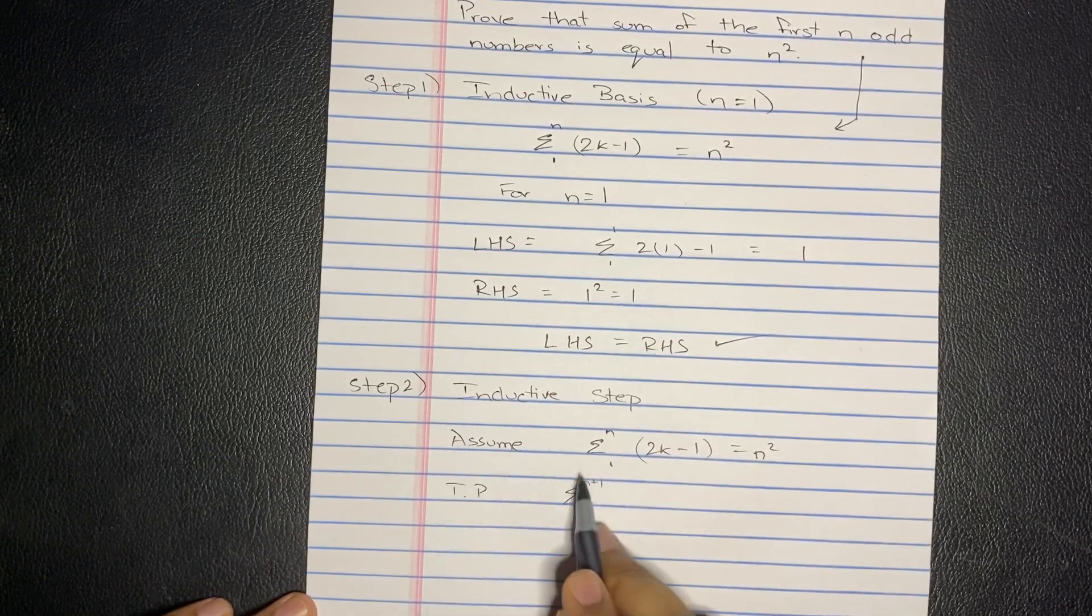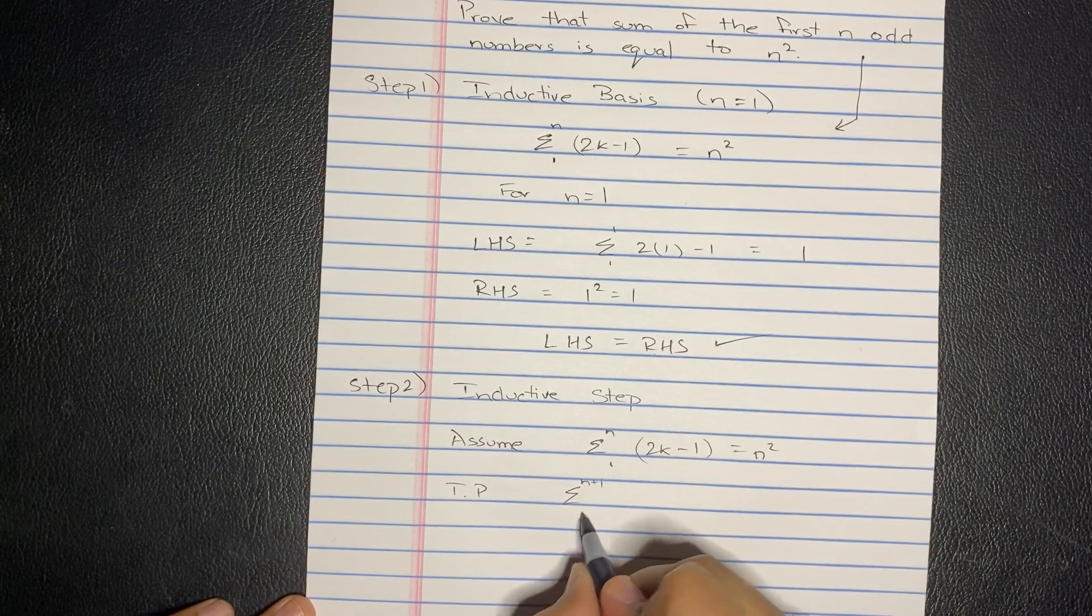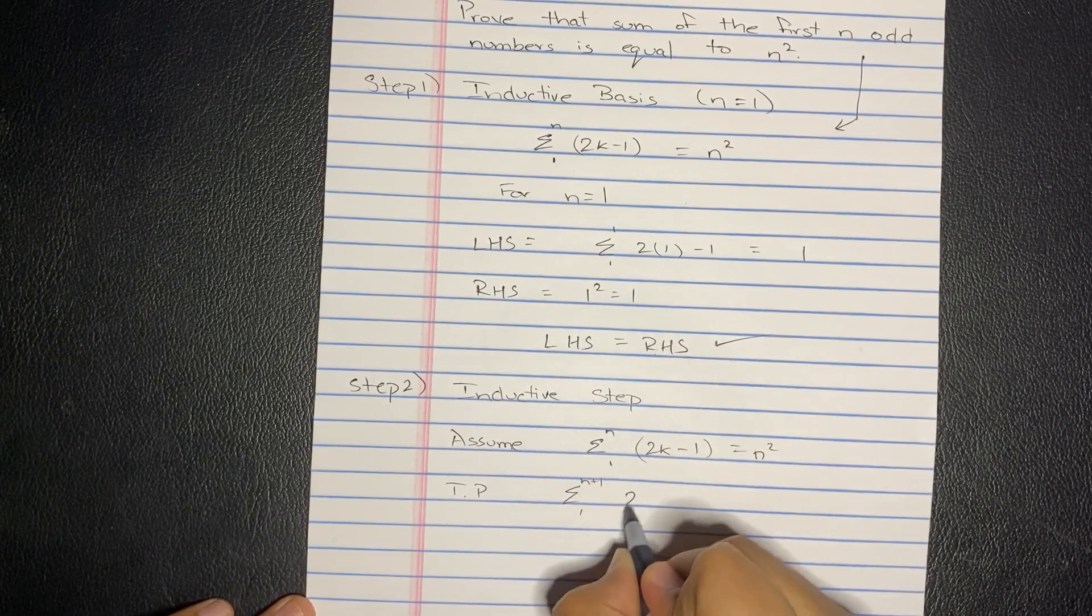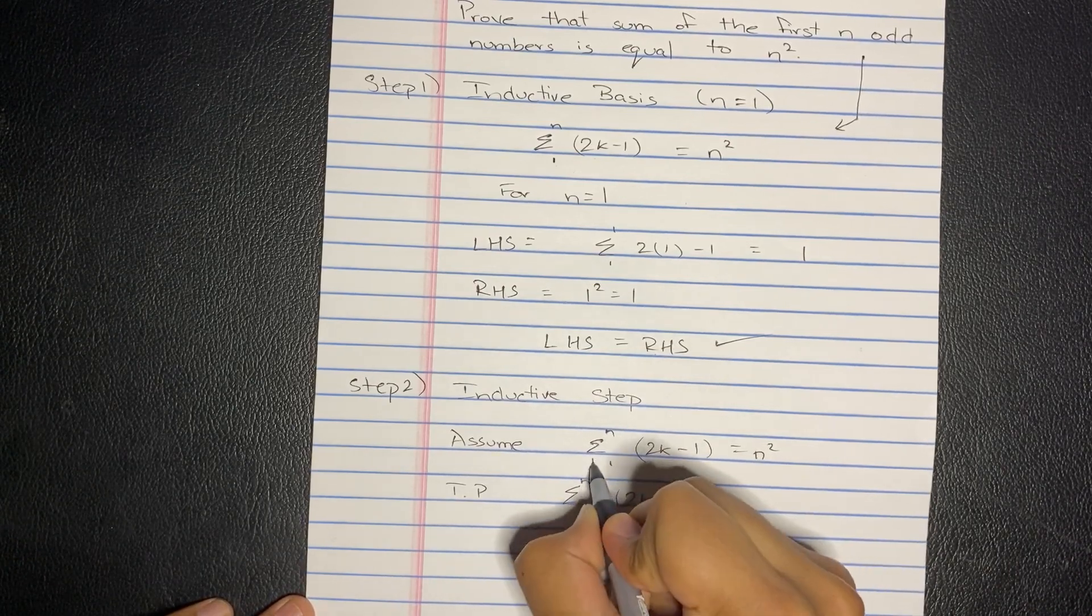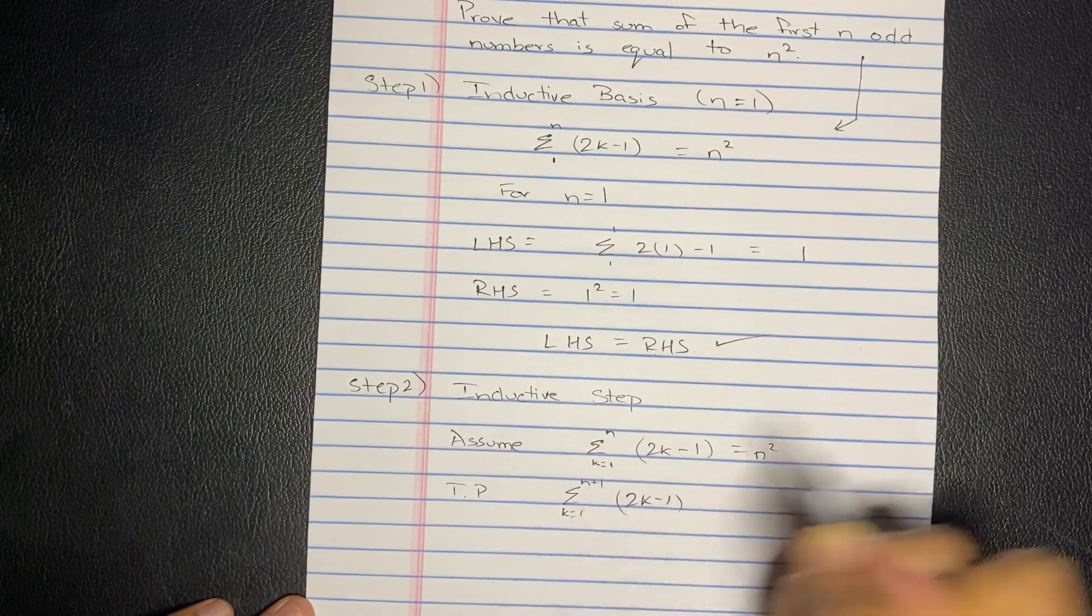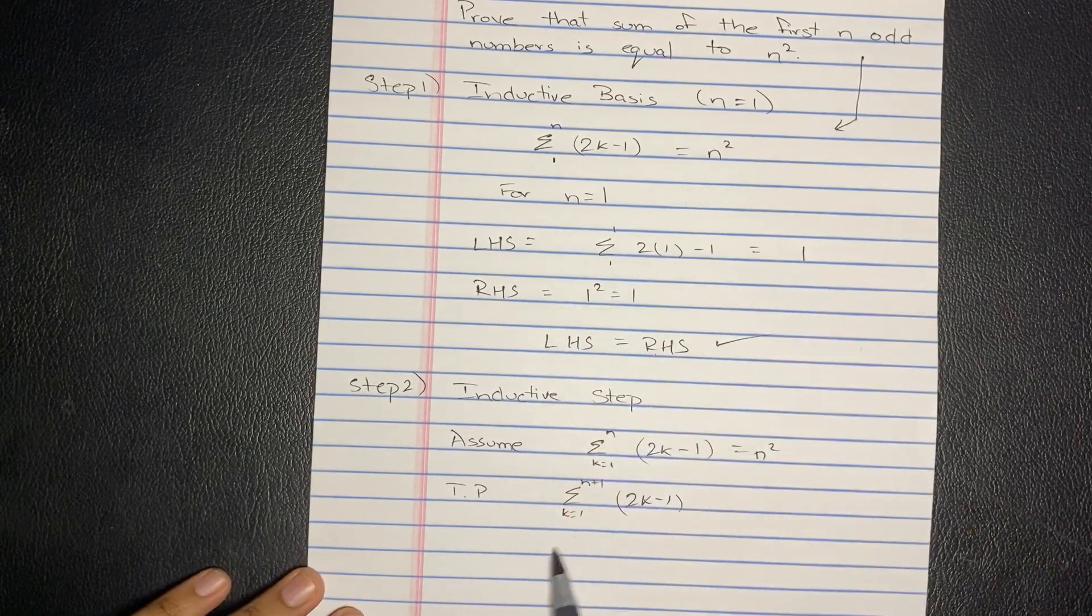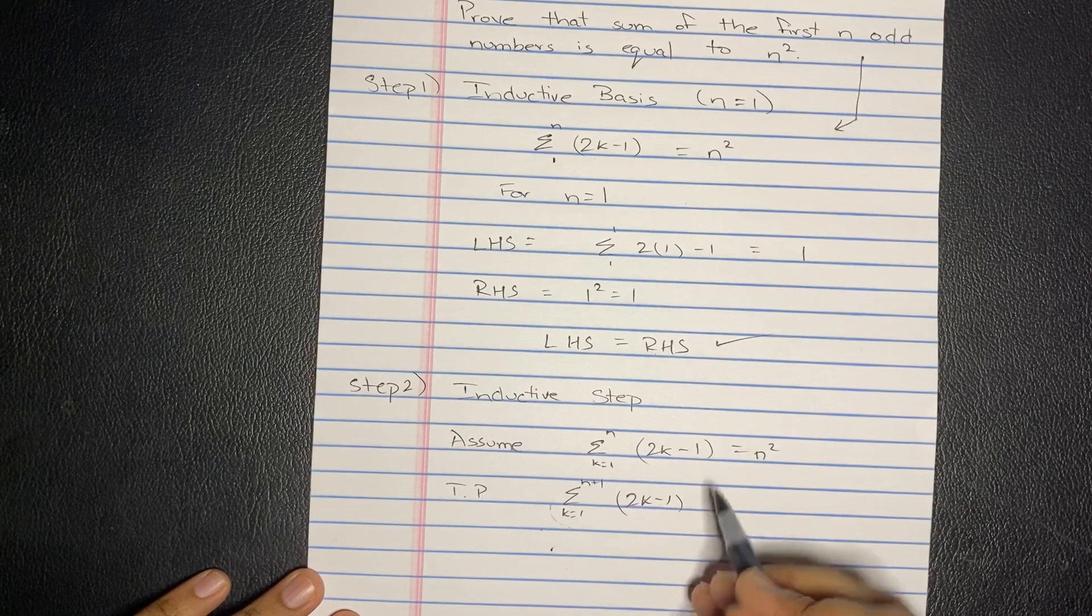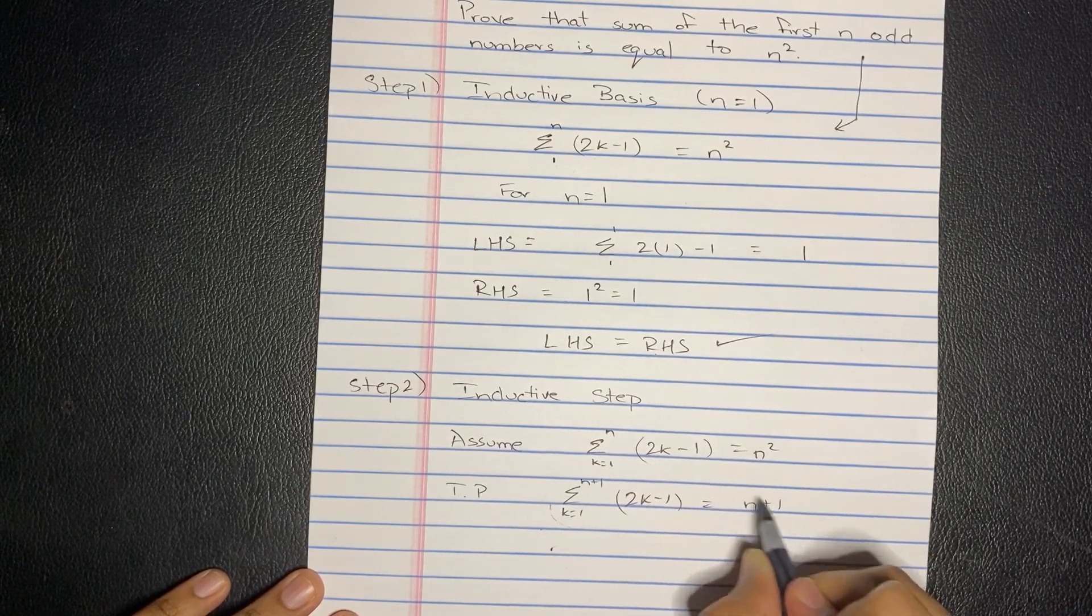So for n plus 1, every n in this case is replaced with n plus 1. So 1 to n plus 1, 2k minus 1. This should be k equals for everywhere. Just the k is replaced by these numbers. Equals n plus 1 squared.